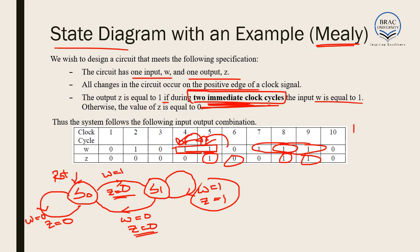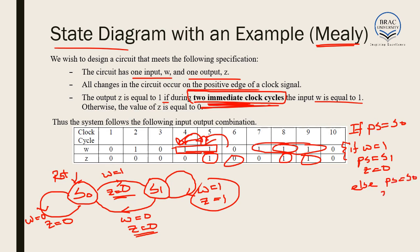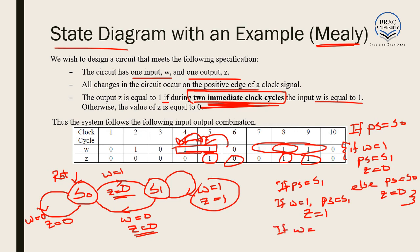The code logic for the Mealy machine: if present state equals S0 and W=1, present state becomes S1 and Z=0; if W=0, present state stays S0 and Z=0. If present state equals S1 and W=1, present state remains S1 and Z=1; if W=0, present state goes back to S0 and Z=0. This is the algorithm for realising this Mealy state diagram.